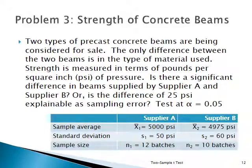Here's another problem. We are considering two different types of precast concrete beams, and the material is measured for its strength in pounds per square inch (psi). The question is whether there's a difference between the beams supplied by supplier A (group 1) and supplier B (group 2). The sample sizes are very small — only 12 from the first supplier and 10 from the second — and we don't know sigma. We're assuming the two variances are statistically equal and the populations are normally distributed.